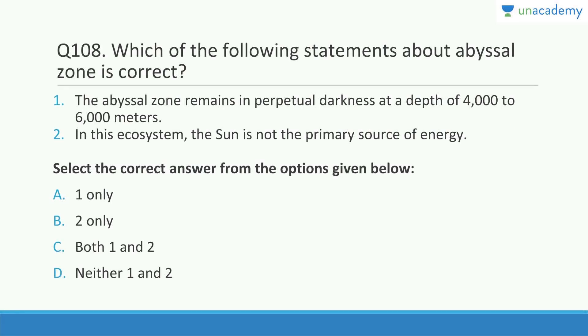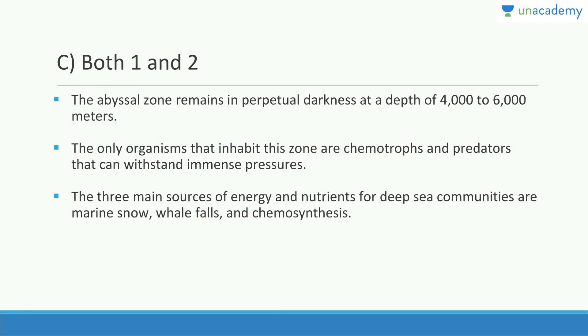Which statements about the abyssal zone are correct? The abyssal zone remains in perpetual darkness at a depth of four to six kilometers. In this ecosystem, the sun is not the primary source of energy because sunlight does not penetrate to such a depth. The only organisms that inhabit this zone are chemotrophs and predators that can withstand immense pressures.